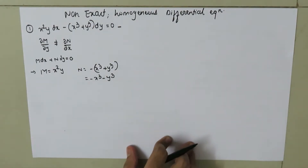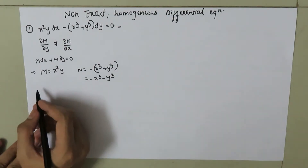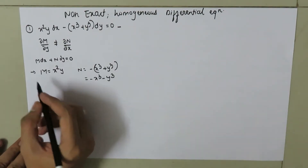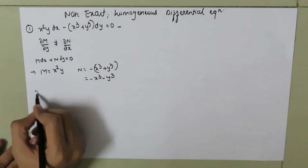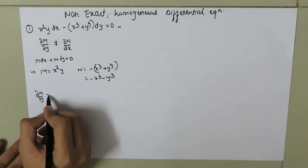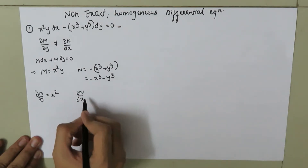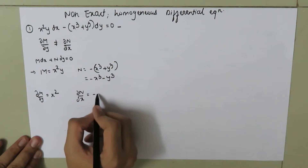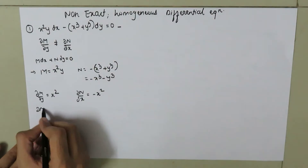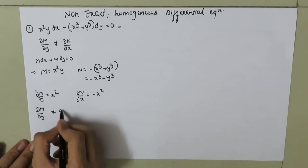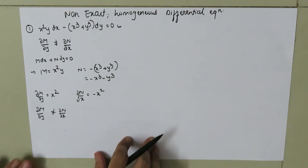First, let us identify whether the given differential equation is exact or non-exact. It is non-exact when ∂M/∂y is not equal to ∂N/∂x. Here ∂M/∂y equals x squared, and ∂N/∂x equals negative x squared. Since ∂M/∂y is not equal to ∂N/∂x, this differential equation is non-exact.